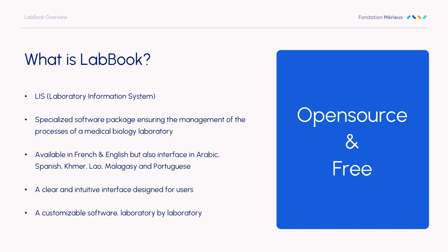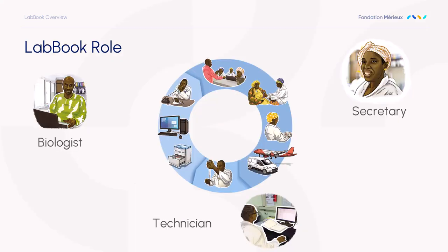It can be very easily customized by putting the lab logo and all your own information into the software. How is LIS working? There is the dedicated lab activity process that goes from the secretary, who enters all the patient information and all the requests for analysis, then moves to the technician account, which puts all the lab results into the software, and then to the biological account, where biological validation is done and the lab report is edited.